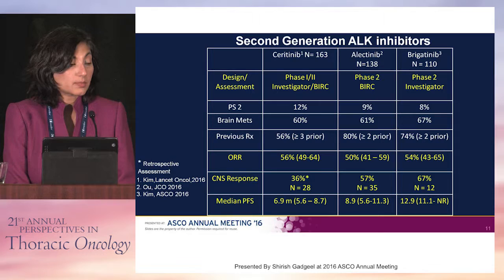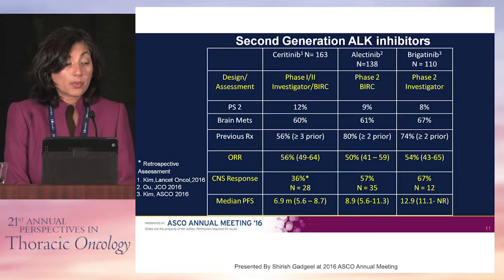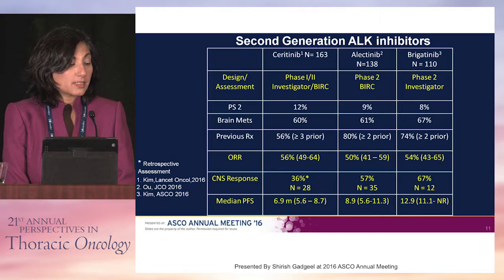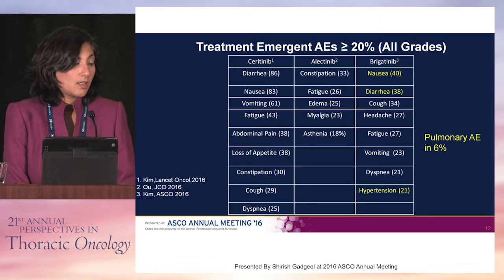This illustrates data in aggregate for ceritinib, alectinib, and brigatinib. Response rates, especially in previously treated patients, were similar. CNS responses are listed for all agents. It's important to realize that CNS activity wasn't necessarily an endpoint in the design of all these trials initially, but as activity was clear, data was evaluated retrospectively. Median PFS across these series varies a little but also depends on prior treatment.